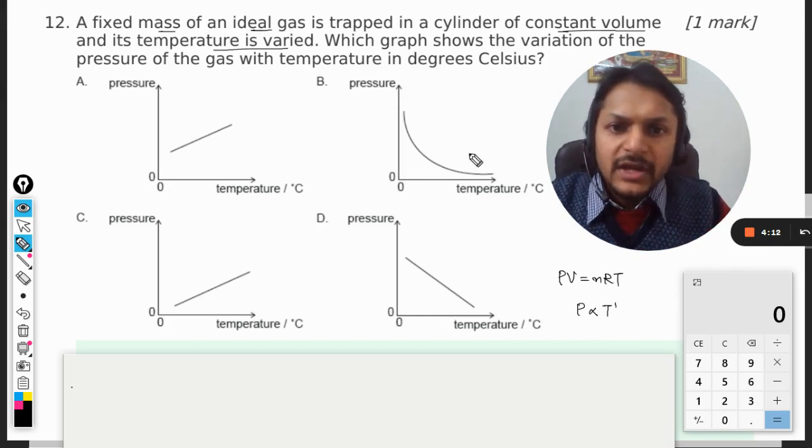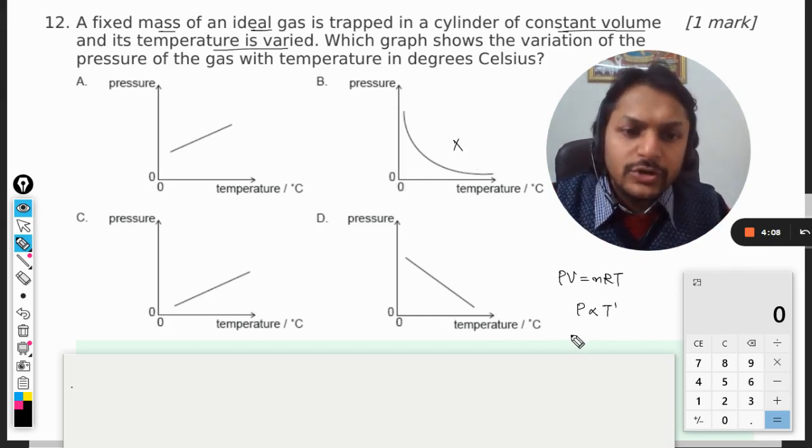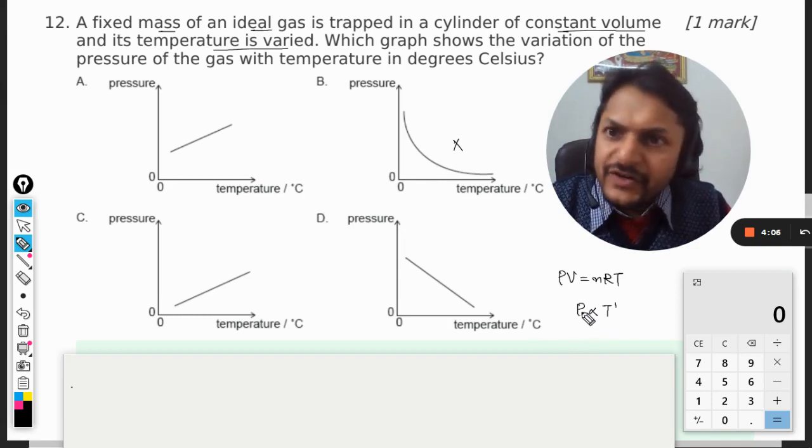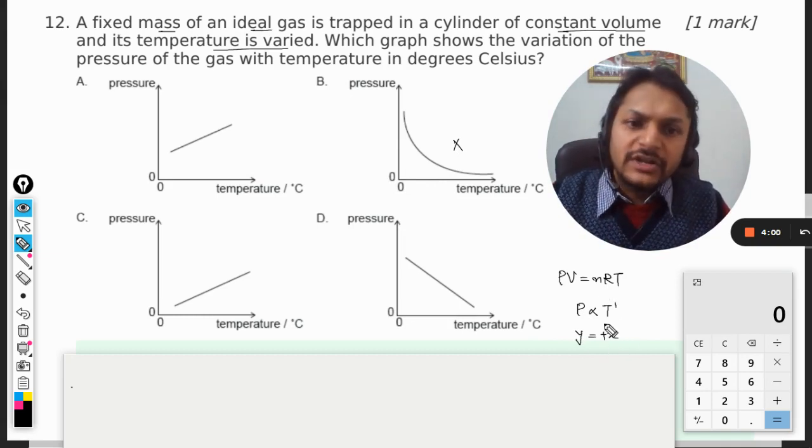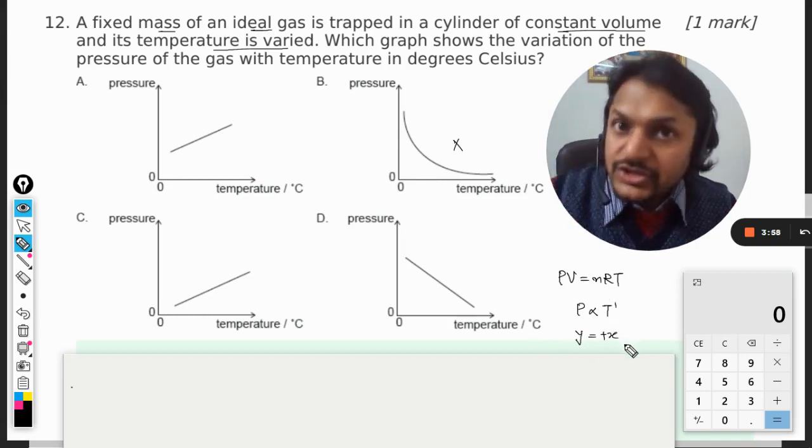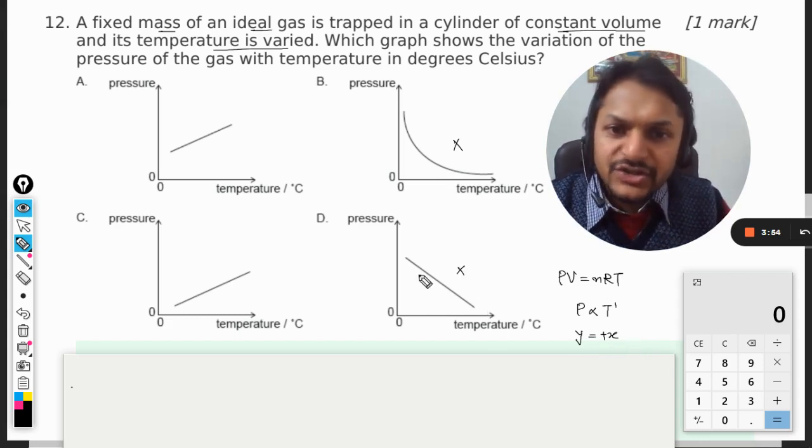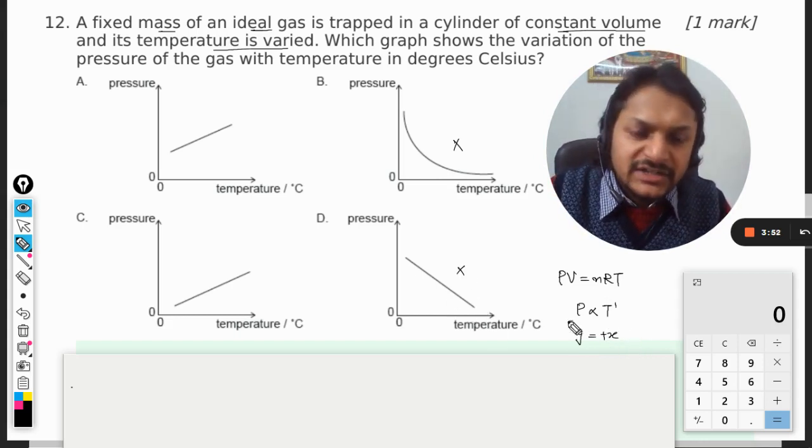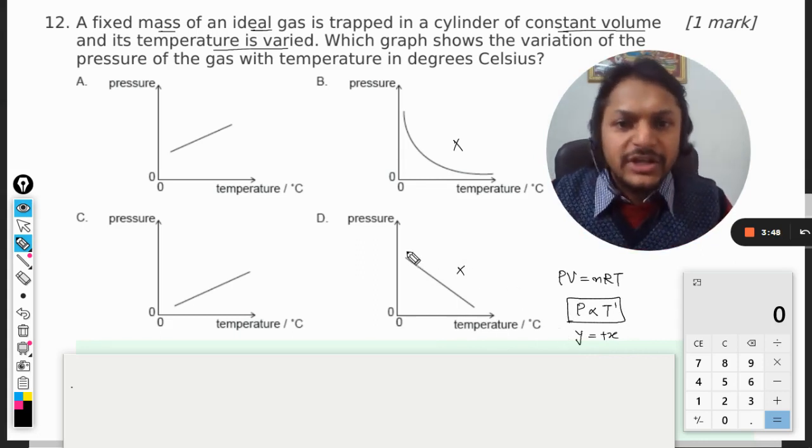First of all, this is out of our option. Now another thing to be noted here is that if pressure is on the y-axis and this is on the x-axis, you can see that the coefficient is positive, so it is going to have a positive slope. It cannot have a negative slope, so pressure is not reducing with temperature. See, it's directly proportional - more is the temperature, more is the pressure. So D is also out of the question.